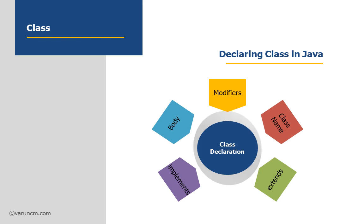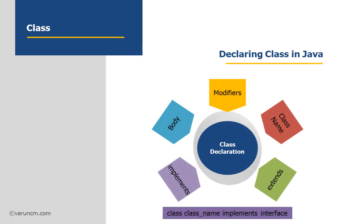The next component is implements. When you are in need of implementing some interface, you could use this implements keyword. How to use it: class, followed by the class name, then followed by implements, then the name of the interface from which you are going to implement the concepts.